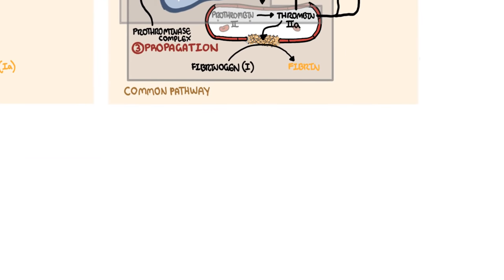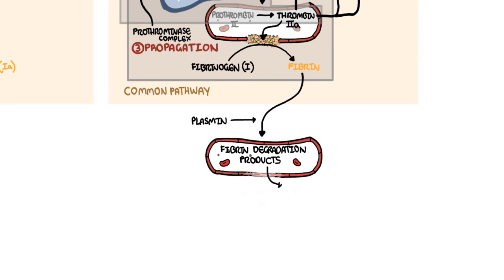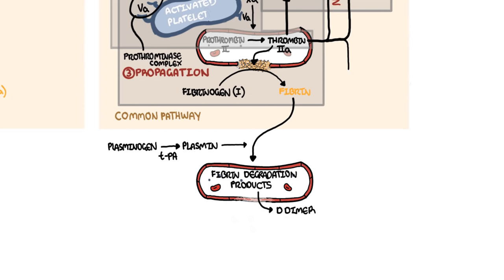To restore vessel patency following hemostasis, the clot must be organized and removed — this is called fibrinolysis. Fibrin is broken down to fibrin degradation products, including D-dimers, by the enzyme plasmin. Plasmin is derived from its precursor plasminogen, which is activated by tissue plasminogen activator, TPA. Interestingly, thrombin activates a molecule called thrombin-activatable fibrinolysis inhibitor, which, as the name suggests, slows down fibrinolysis to preserve the fibrin clot.